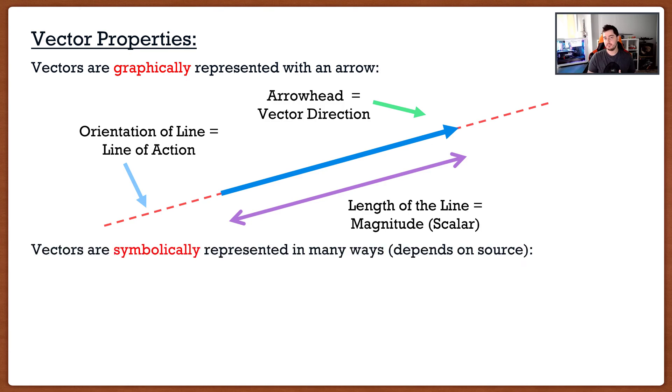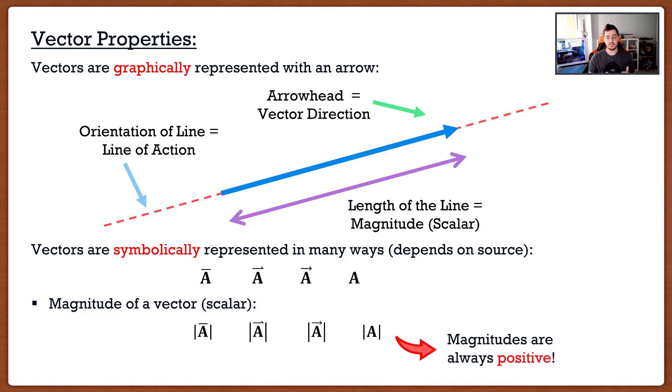Vectors are symbolically represented in many ways. It depends on the source, but all in all, they look very similar. The most typical thing you guys will see is that a vector will be bold, with something over the top of the vector - a straight line, a half arrow, or a full arrow. If we're talking about the magnitude of a vector, which is a scalar, it's going to have the same symbol but with absolute value signs around it. Magnitudes are always positive.